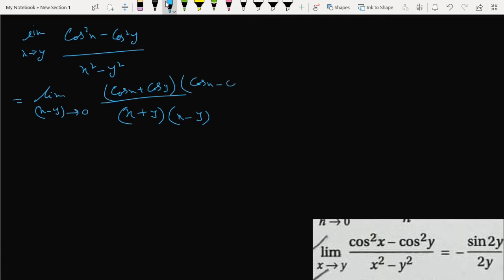And as we know, cos x plus cos y gives a formula like this: 2 cos((x+y)/2) cos((x-y)/2), and cos x minus cos y has a similar transformation.